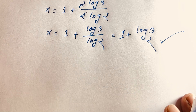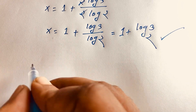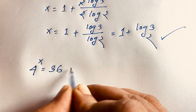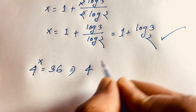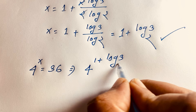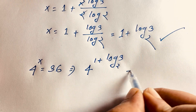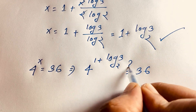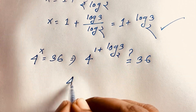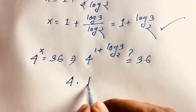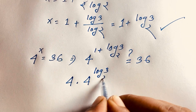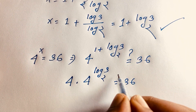Let's check our answer. Our question is 4 to the power x is equal to 36. So substituting x equal to 1 plus log base 2 of 3, we have 4 to the power of (1 plus log base 2 of 3) is equal to 36. This gives us 4 to the power 1, times 4 to the power log base 2 of 3, is equal to 36.